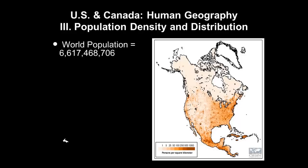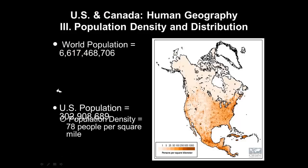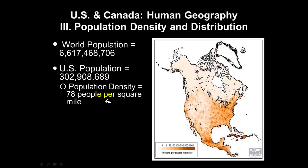Before we do that, let's take a look at the world population and tie this in to North America. The population of the entire planet Earth is right at 7 billion. The population for the United States of America is right over 300 million. The population density, which is the average amount of people living per square mile in the United States, is 78 people per square mile.